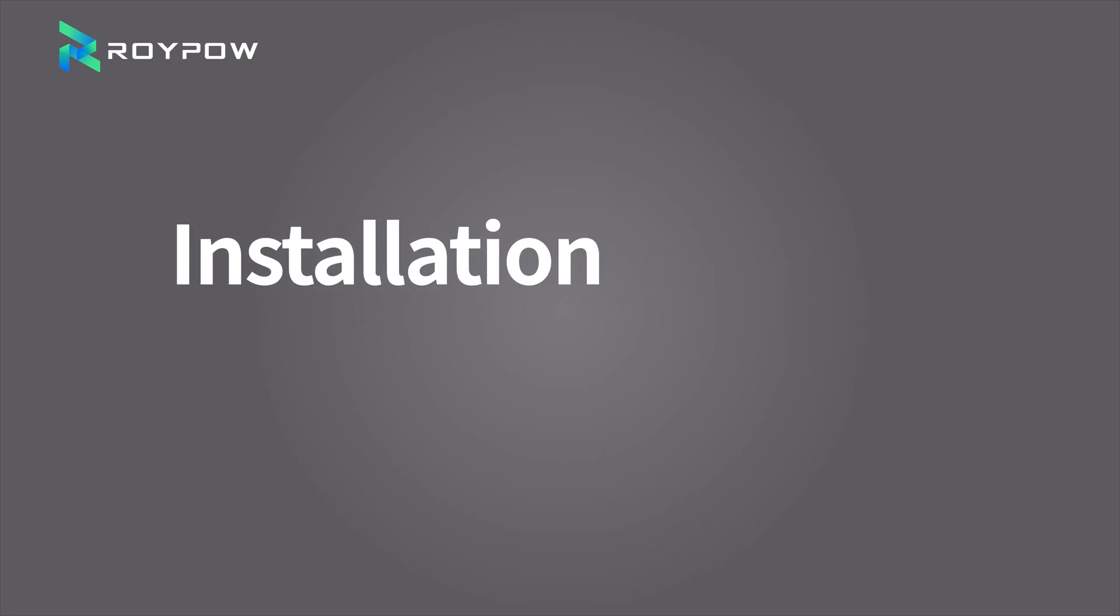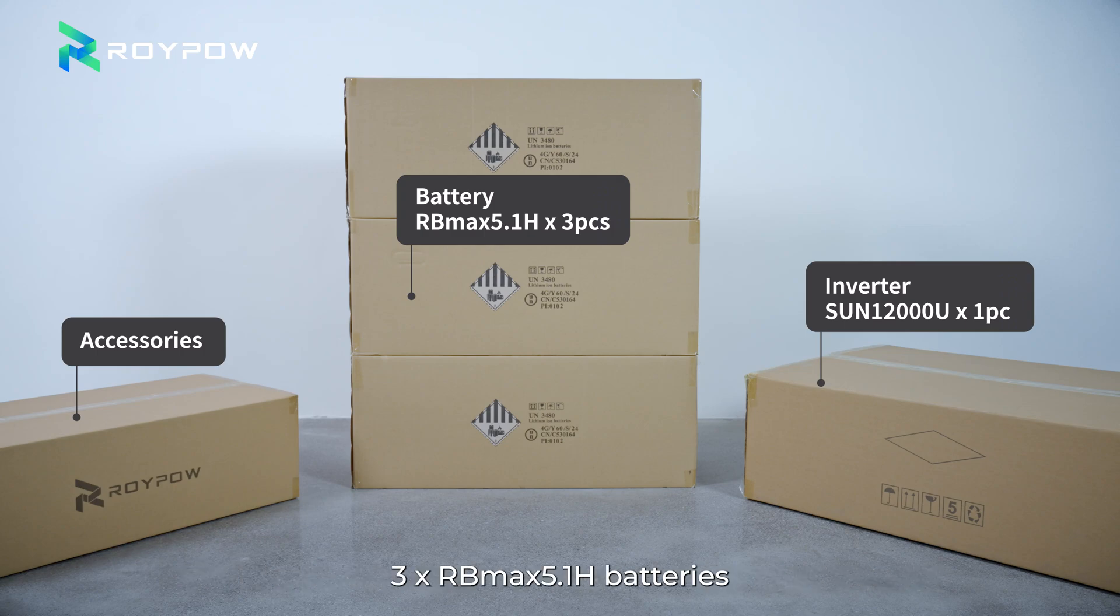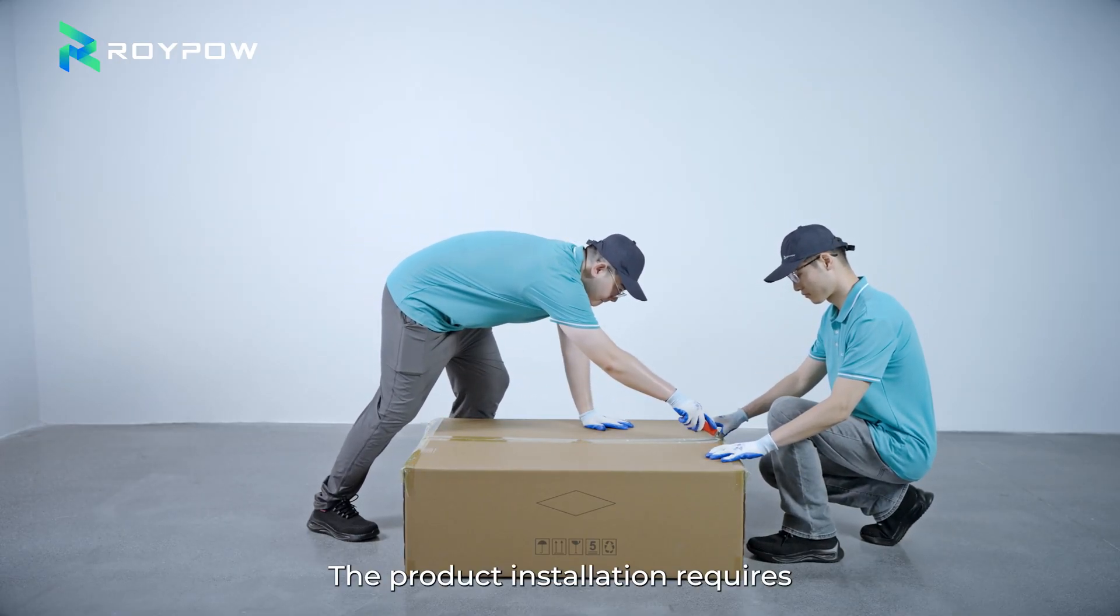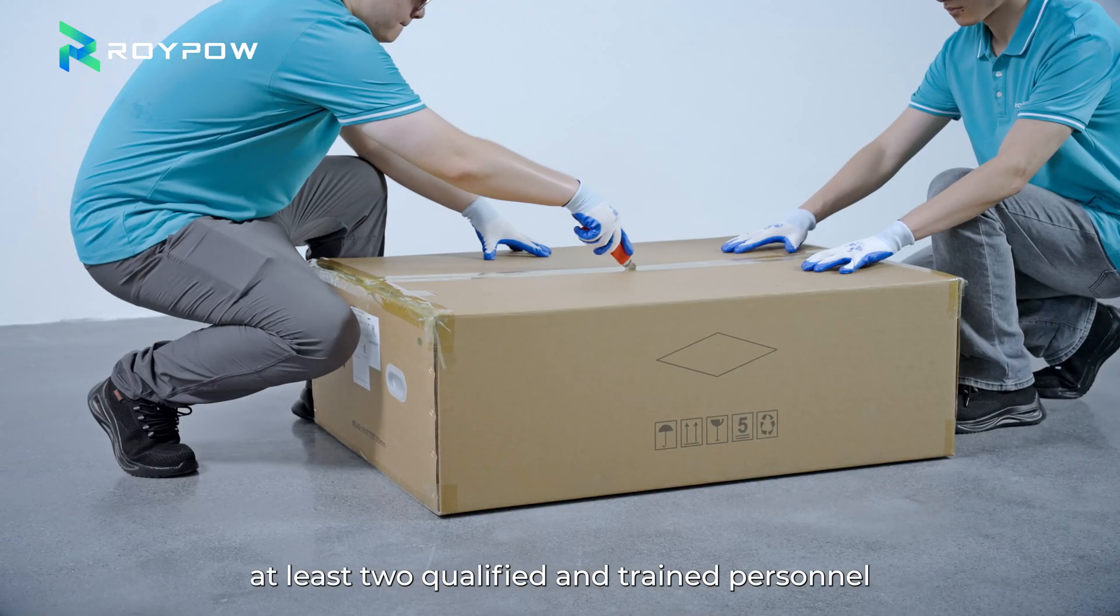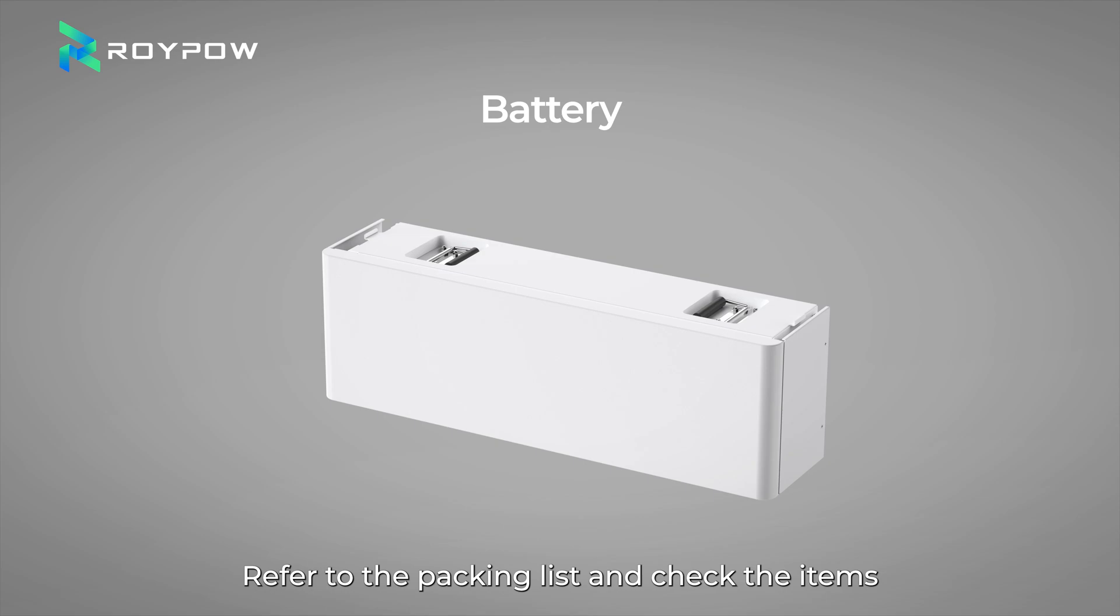Installation. The 12kW 15kWh System consists of one 12kWh inverter, three 5.1kWh batteries, and one accessory package. The product installation requires at least two qualified and trained personnel. Move the box to the installation site, open it, refer to the packing list and check the items.